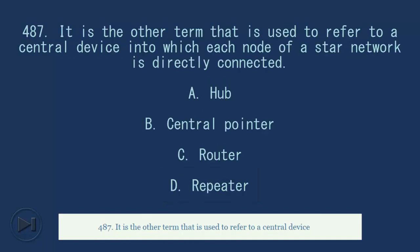487. It is the other term that is used to refer to a central device into which each node of a star network is directly connected. A. Hub. B. Central pointer. C. Router. D. Repeater. Answer, A. Hub.